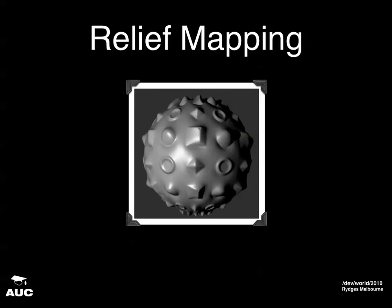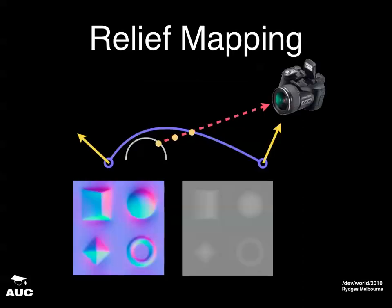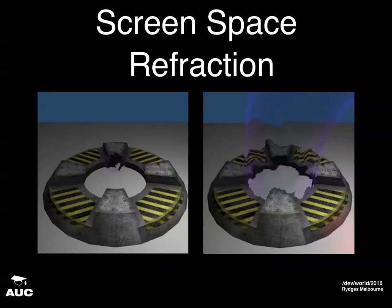The next step is relief mapping, which gets rid of that occlusion problem. If we have a step, we can actually look beyond the step, and as you see around the edges here, you can see where the object shouldn't be rendered. It actually sticks out. How this works is instead of just stopping at the normal, we step along the height map until we actually hit the object. It's kind of a hybrid between ray tracing and the rendering we were talking about before.